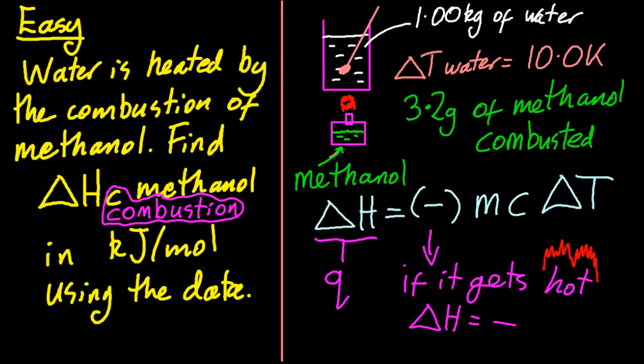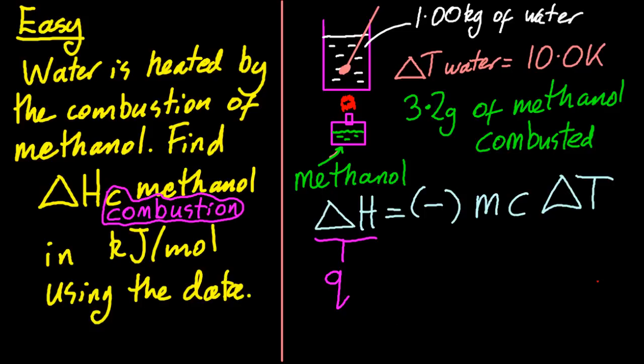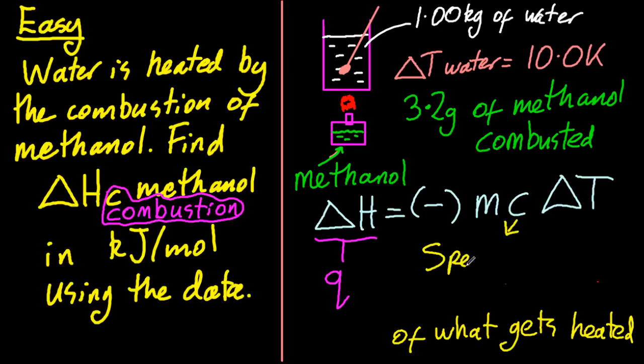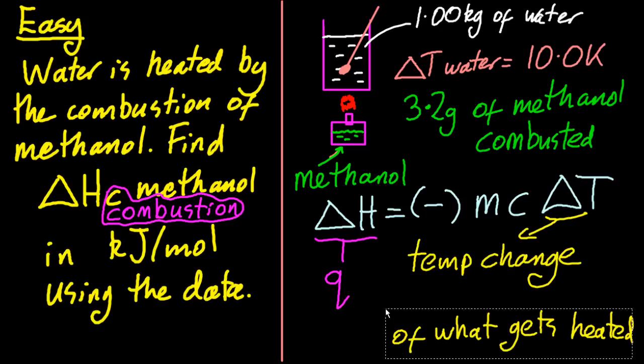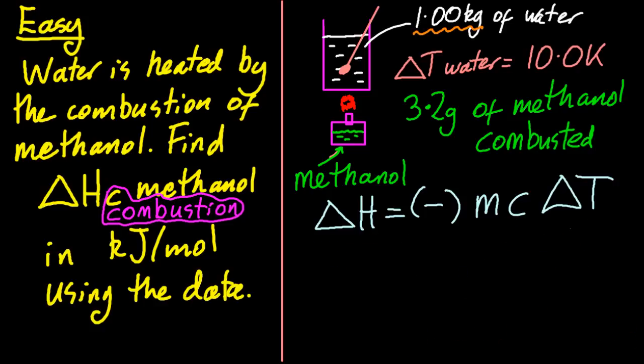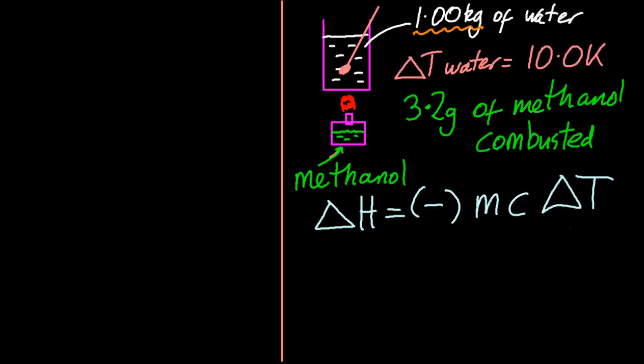So q is delta H. NIB, that's the same thing. So the mass of what gets heated is m. C is the specific heat capacity of what gets heated. And delta T is the temperature change of what gets heated. They might try and trick you and give you other temperature changes for other things. But no, no, it's what gets heated. The mass, the specific heat capacity, and the temperature change of what gets heated. Not what does the heating. All right then, let's put the numbers in.